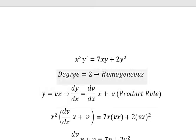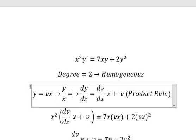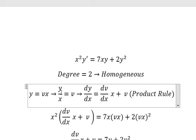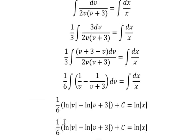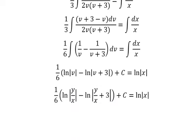This one we have ln of the absolute value of x. So v is y/x, so we divide both sides by x, and now we need to change this one into y over x. This is the end, thank you for watching.